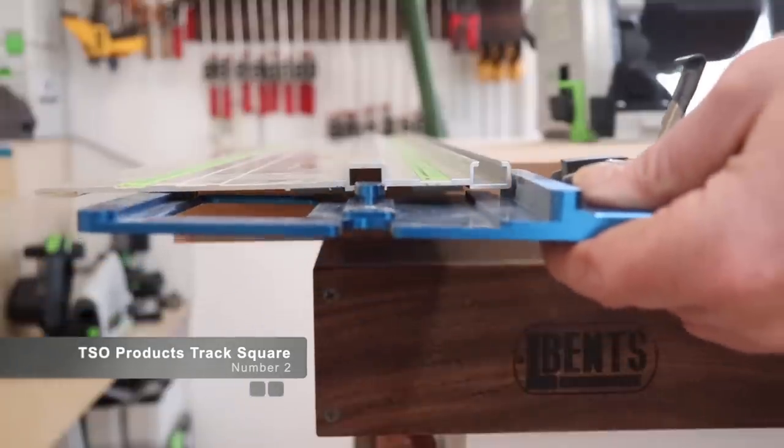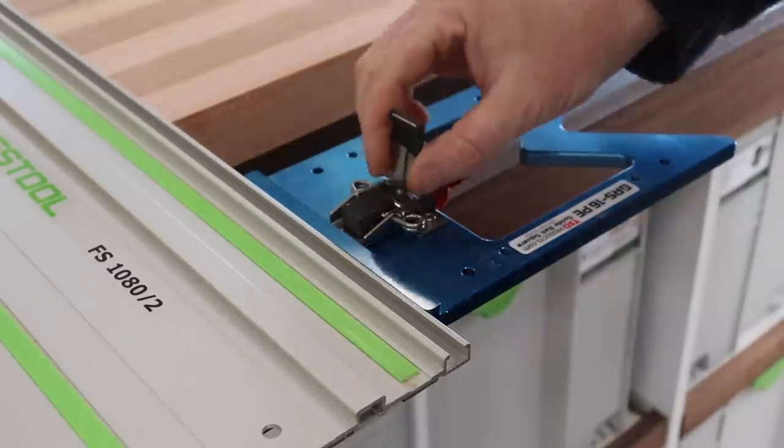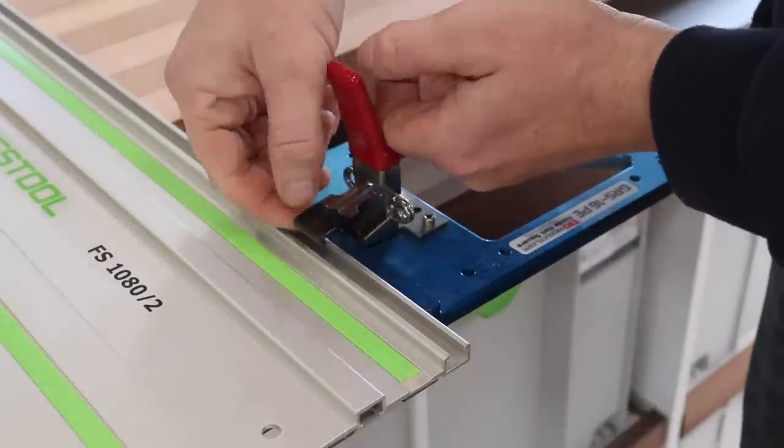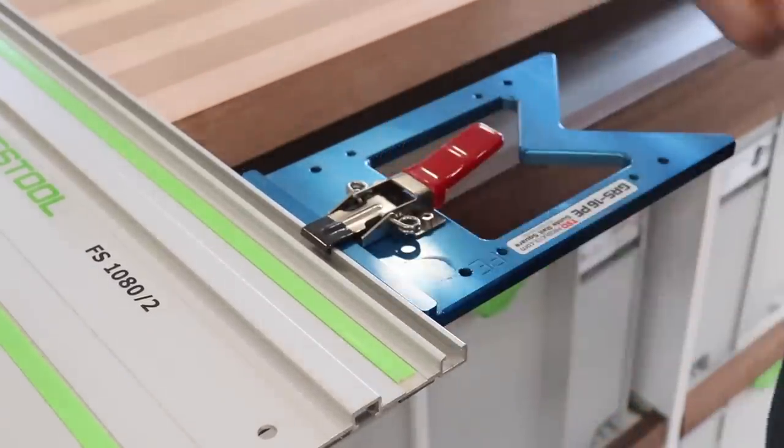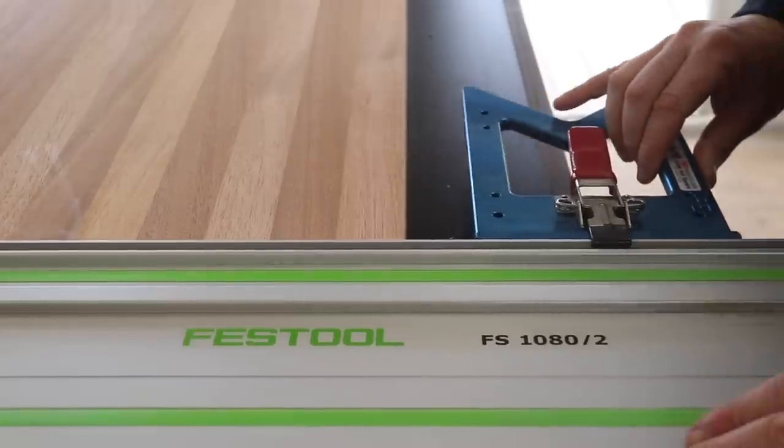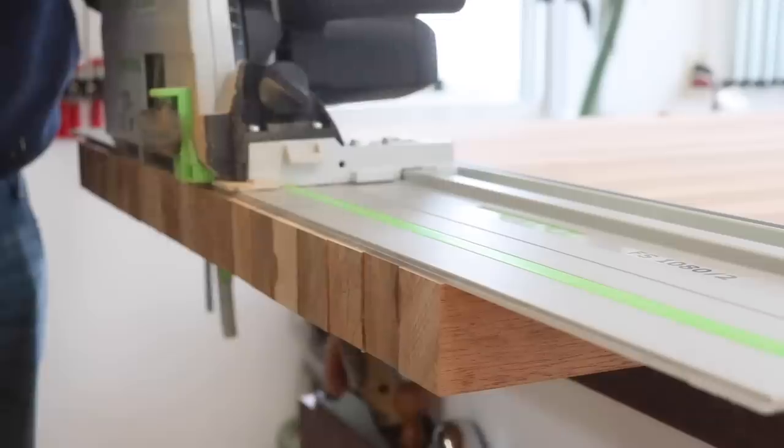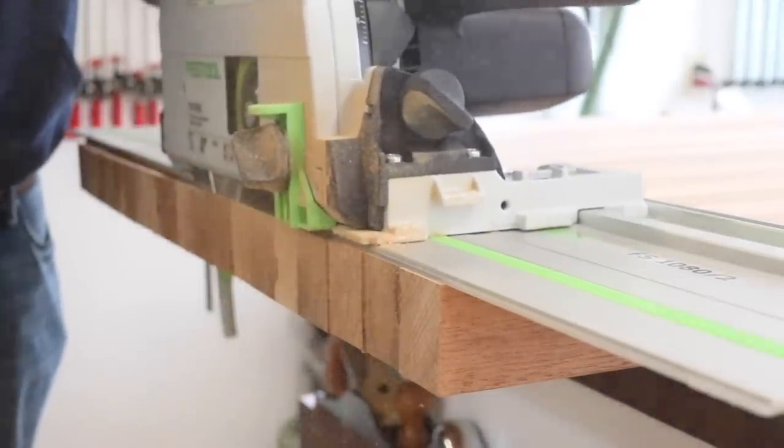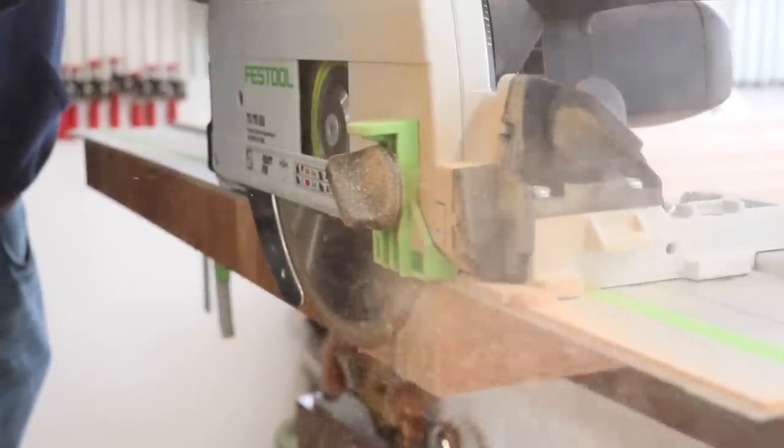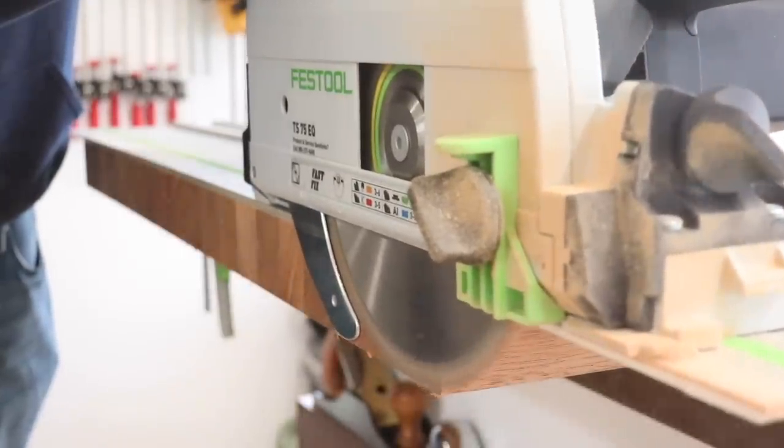The next item is the TSO Products Track Rail Square. This is a very useful tool to have if you're somebody that uses a track saw. It does not have to be a Festool track saw, as you see here. These rail squares actually work with multiple brands of track saws. It really just makes it easy to get a quick 90 degree reference so you don't have to pull out any additional squares. There are some other companies that make them as well. More specifically, Woodpeckers just recently released one, which I own as well. It's a great tool to have if you use a track saw.